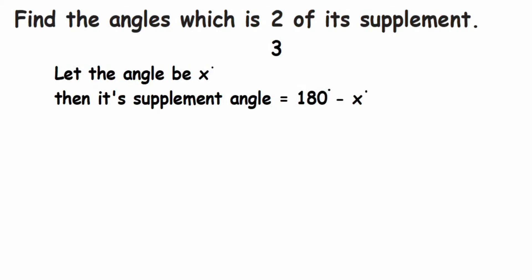Here is a question on lines and angles: find the angle which is two-thirds of its supplement. Now, what is a supplementary angle? Supplementary angles means when you add two angles, the sum should be equal to 180 degrees — then we call them supplementary angles.